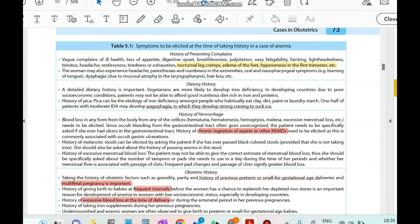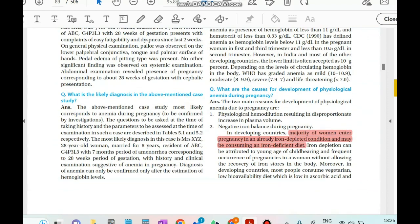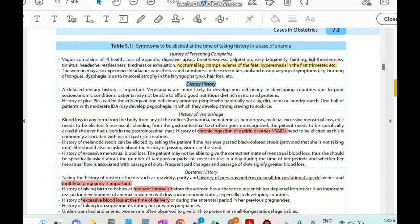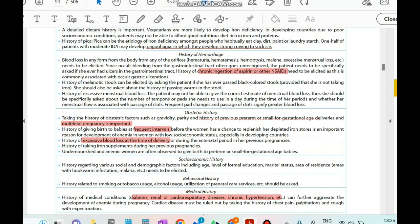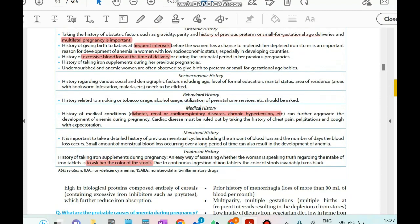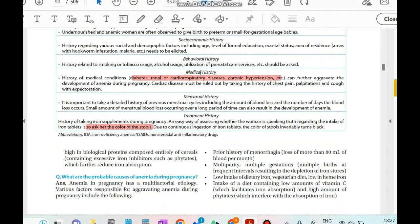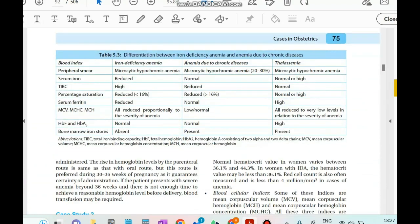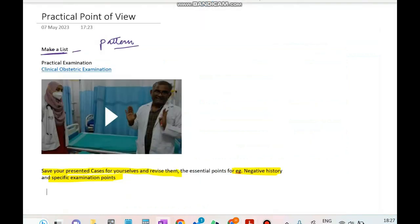And the beautiful thing about this book is they have given this table where, for example, here is the case of anemia and pregnancy. So what is the history of presenting complaints in this patient might come to you? What is the dietary history related important aspects in these patients? So vegetarians are likely to develop iron deficiency. What is pica or pagophagia? The history of hemorrhage in anemia, the history of obstetrics in anemia—any multiple pregnancy in the past or any history of frequent intervals of delivery or excessive blood loss at the time of delivery. So these are important obstetric aspects. What is the socioeconomic history important, why is behavioral history important, why is medical history important? So this table, even if you can't go through the entire chapter, you can go through this table one table at a time. For example, if you're going to present a case of previous LSCS tomorrow, you just open this book, read this particular table, it will help you a lot in the presentation and understanding. So we're done with the practical point of view as well.